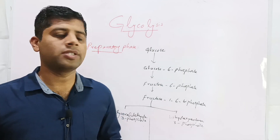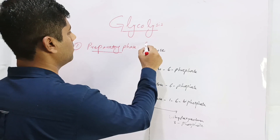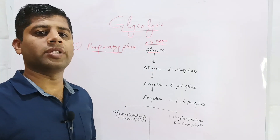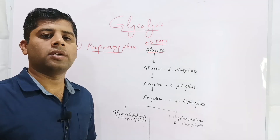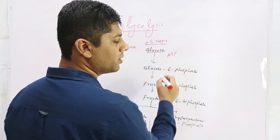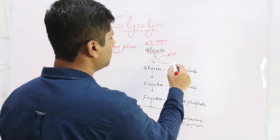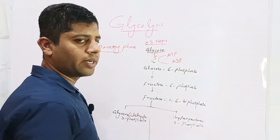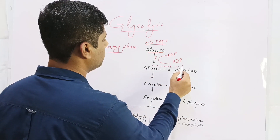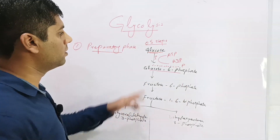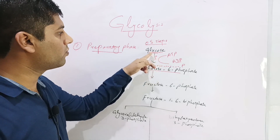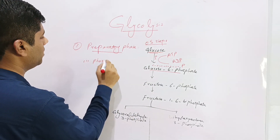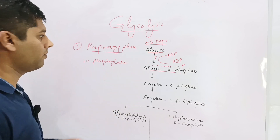The preparatory phase of glycolysis includes five steps and starts with the glucose molecule, the primary organic molecule which is the source of energy in human or animal bodies. In the first step, an ATP molecule donates a phosphate to the glucose molecule, leaving behind ADP. This phosphate attaches to carbon number six of the glucose molecule, forming glucose-6-phosphate. This process is called phosphorylation.